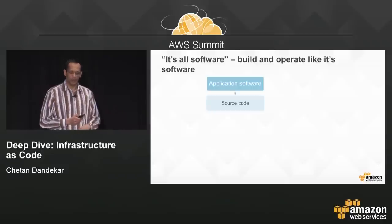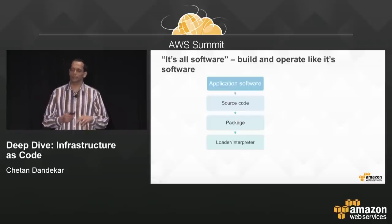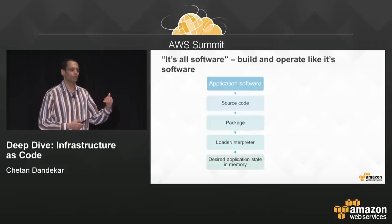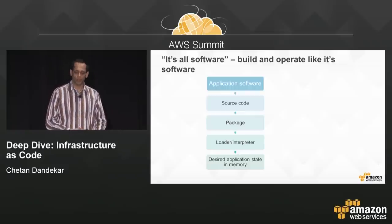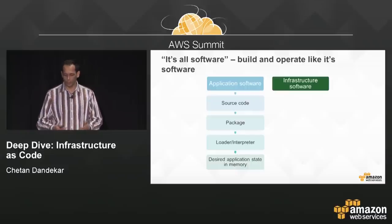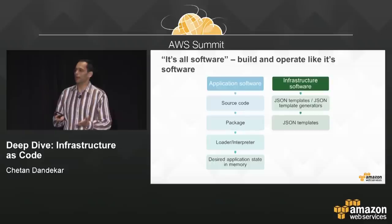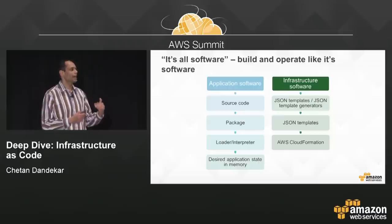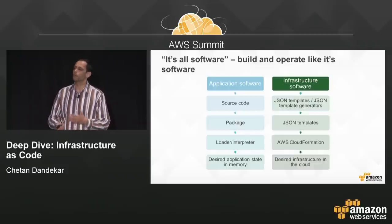If you think about application software, someone writes source code, builds and packages it, and then a loader or interpreter runs it to reach the desired application state in memory. Infrastructure is no different with CloudFormation. You have JSON templates or scripts that generate JSON templates, package them, and pass them to CloudFormation — which acts as the loader and interpreter — creating the desired state of infrastructure in the cloud.